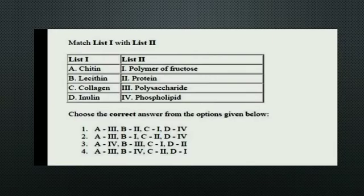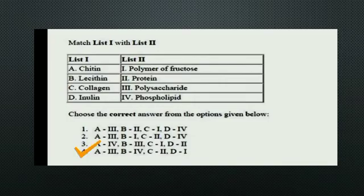The next is a match the following. List 1 consists of Chitin, Lecithin, Collagen, and Inulin. List 2 consists of Polymer of fructose, Protein, Polysaccharide, and Phospholipid. The right answer is Option 4: Chitin is a polysaccharide, Lecithin is a phospholipid, Collagen is a protein, and Inulin is a polymer of fructose.